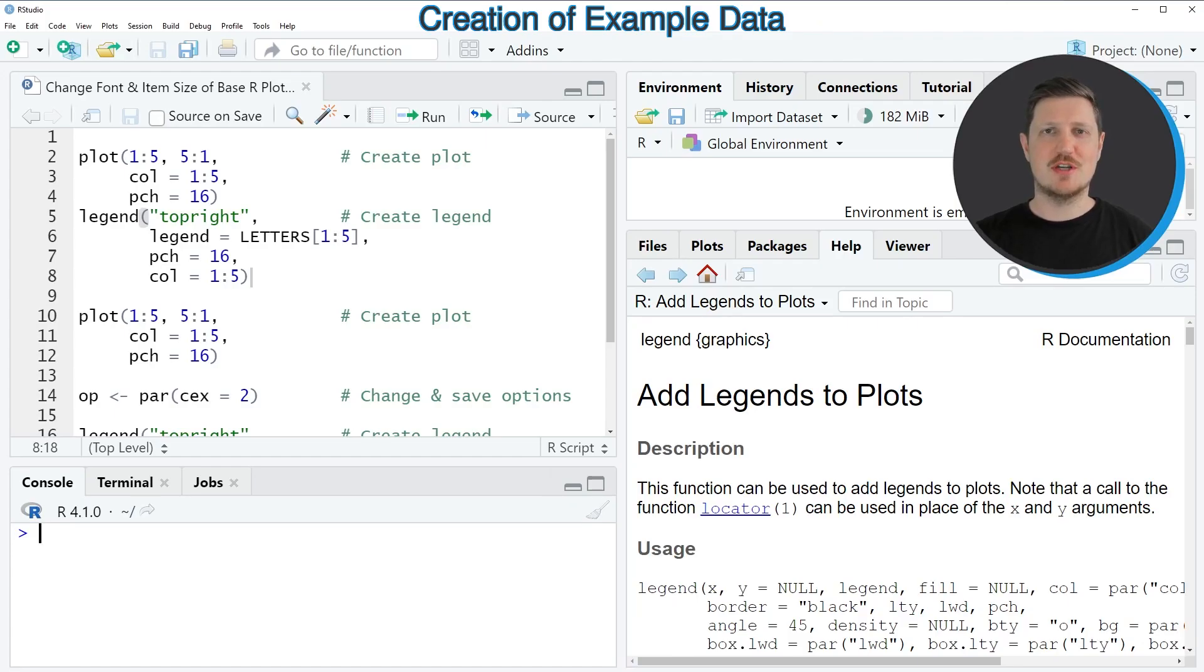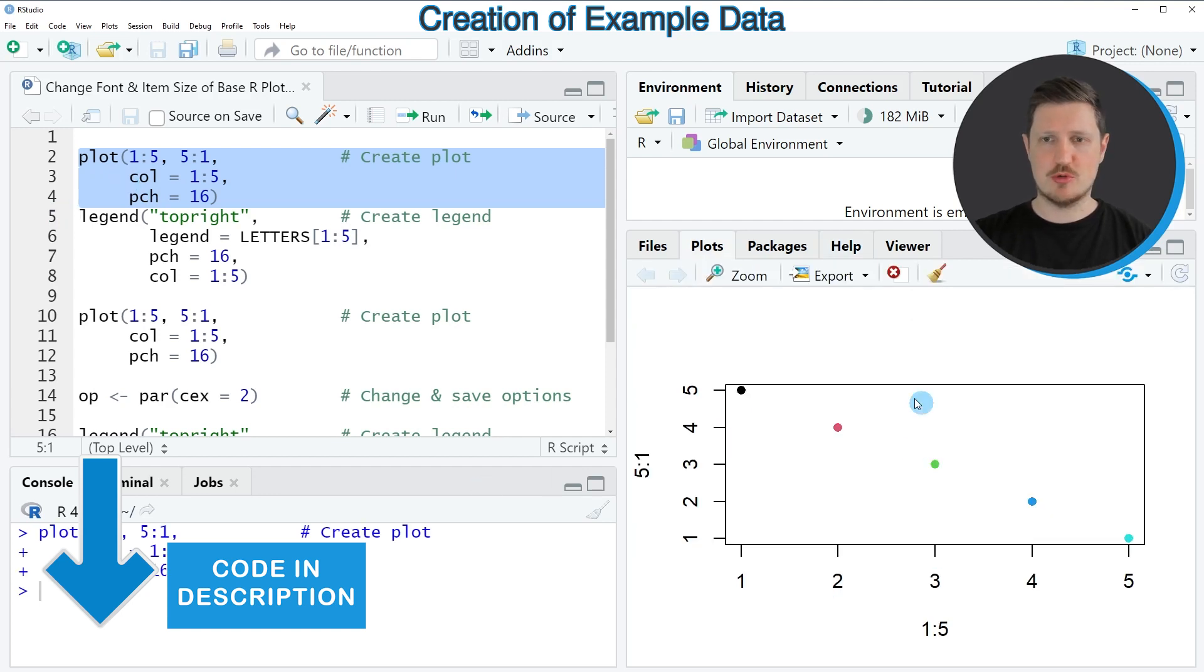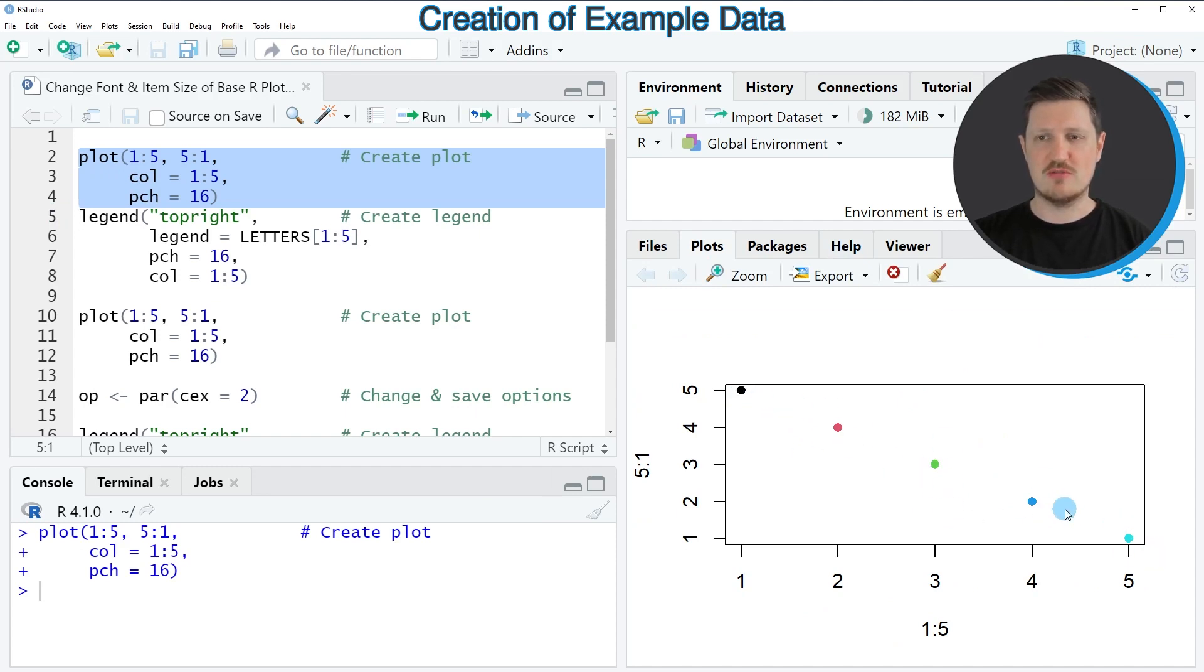In this video I will show you an example based on the plot that we can create with lines two to four of the code. So if you run these lines of code, you can see at the bottom right of RStudio that a new scatter plot has been created showing five different data points with five different colors.